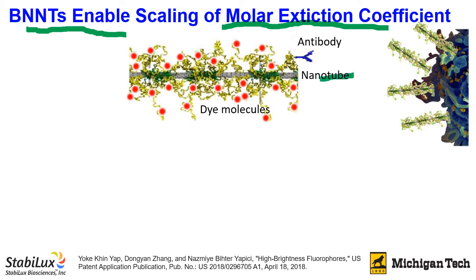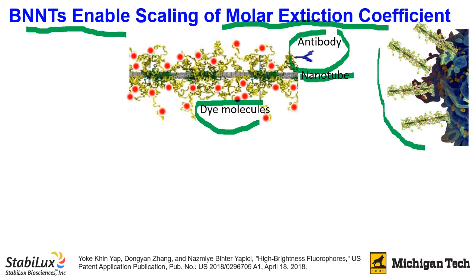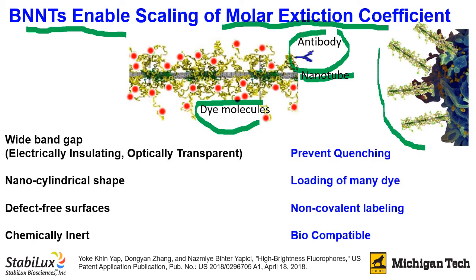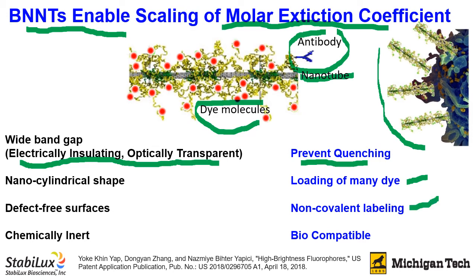We use boron nitride nanotubes as the carrier of a series of dye molecules and an antibody. By doing so, this whole fluorophore will be able to specifically recognize the biomarker on blood cells. The electrically insulating and optically transparent nature of boron nitride nanotubes can prevent the quenching of the dye molecules. We can load as many or as few dye molecules as we want, and this can be done by non-covalent labeling. Since these structures are chemically inert, the high brightness fluorophore constructed in this manner are biologically compatible.